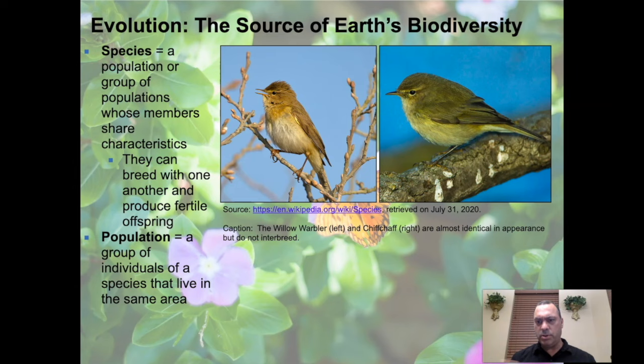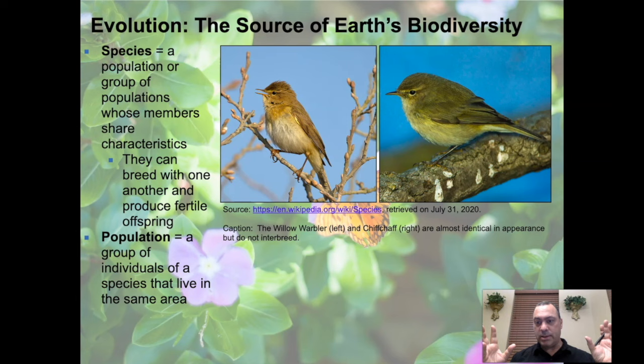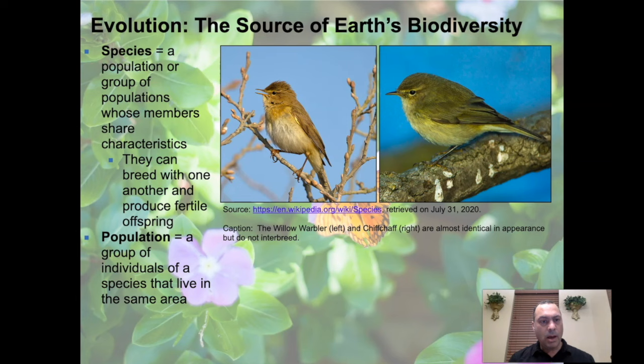You might ask: can't a horse breed with a donkey — aren't they the same species? The offspring of a horse and a donkey is a mule — neither a horse nor a donkey, but a hybrid. A mule cannot reproduce. So the horse and donkey are separate species that share enough genetics to produce offspring, but those offspring are not viable — they cannot produce their own offspring.